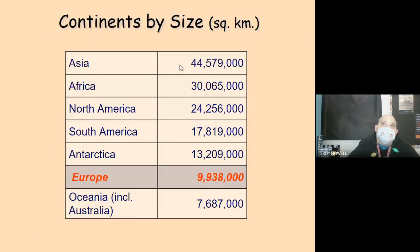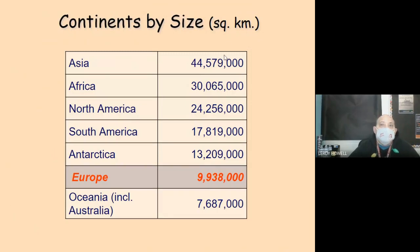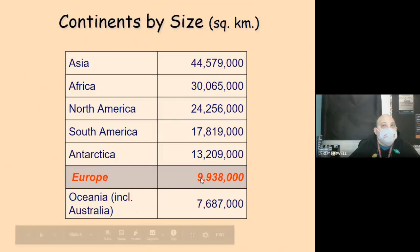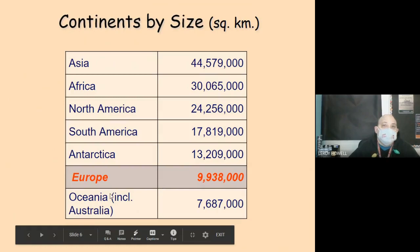Looking at continents by size: Asia is the largest at 44 million 579 thousand square kilometers. Europe is the second smallest continent — it's only larger than Australia and Oceania by about 2 million square kilometers. The order from largest to smallest is Asia, Africa, North America, South America, Antarctica, Europe, and then Australia including Oceania.